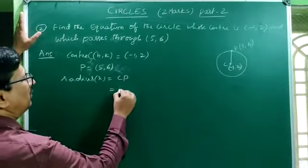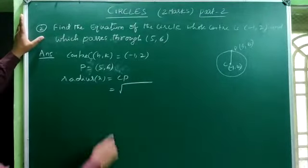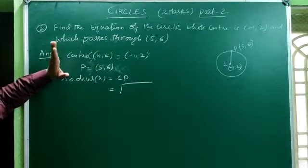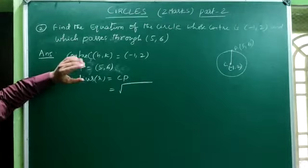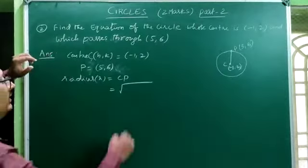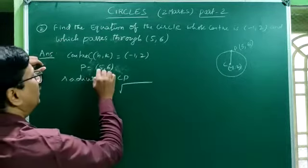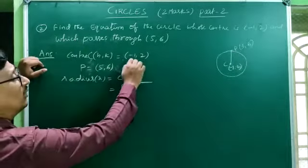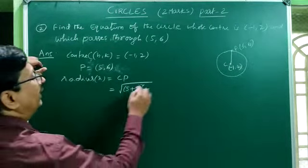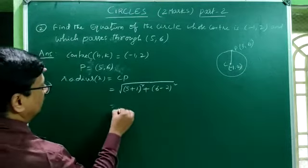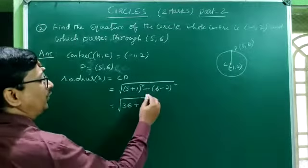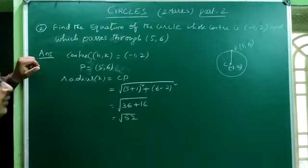The distance between C and P is: CP = √((x2−x1)² + (y2−y1)²). The x coordinates are −1 and 5, the y coordinates are 2 and 6. So CP = √((5−(−1))² + (6−2)²) = √(6² + 4²) = √(36 + 16) = √52.